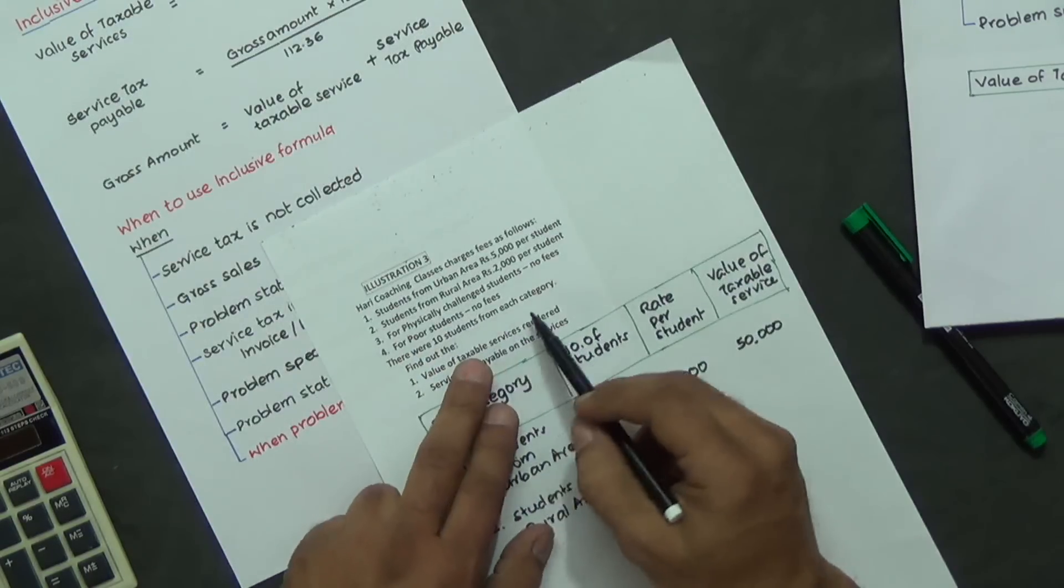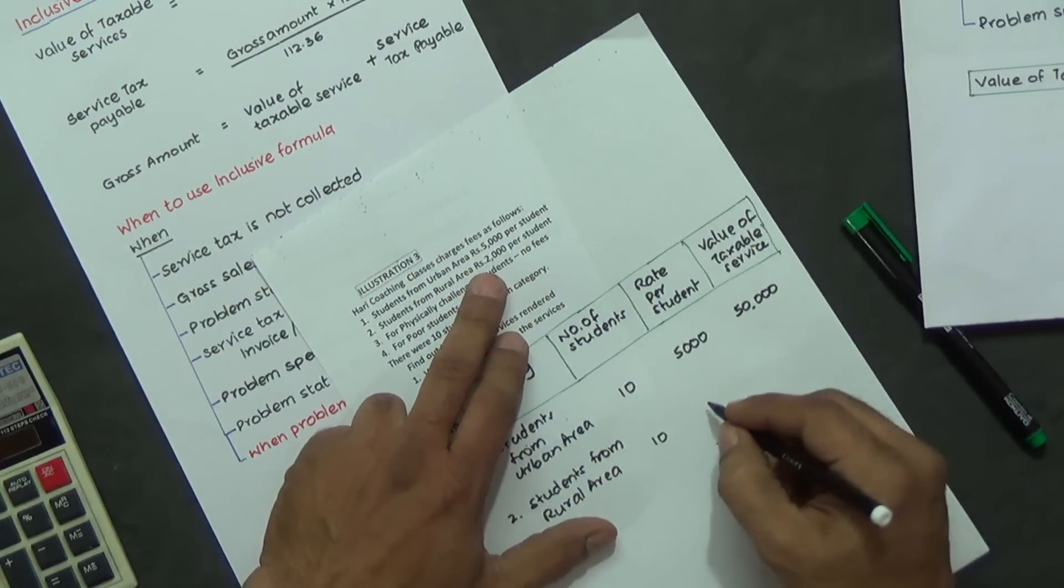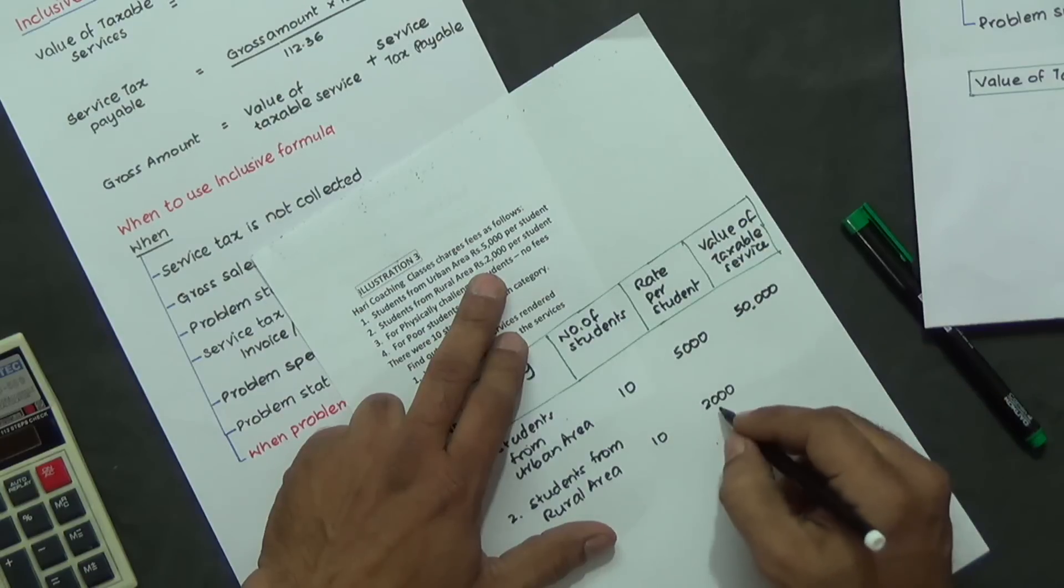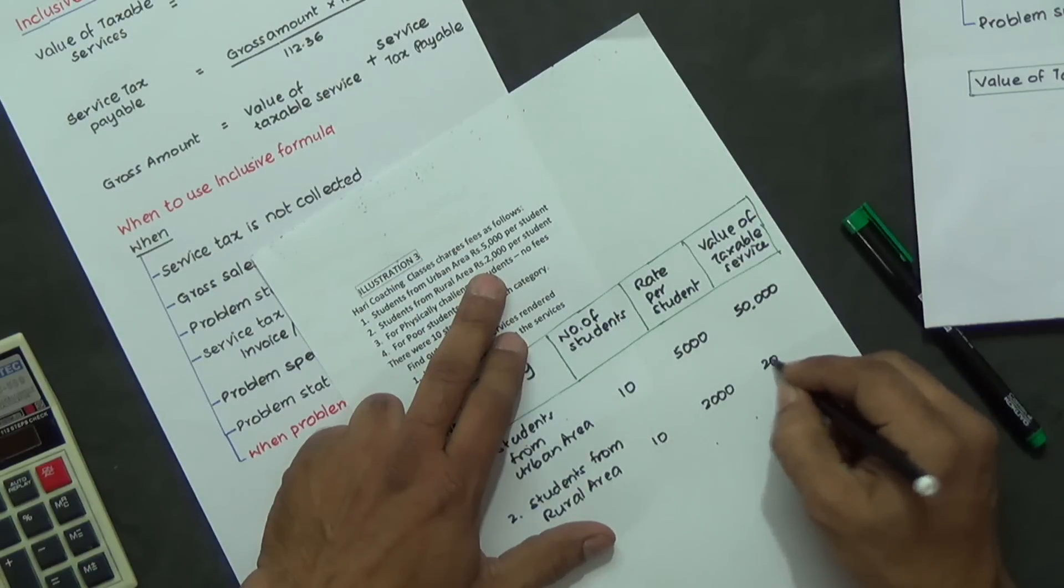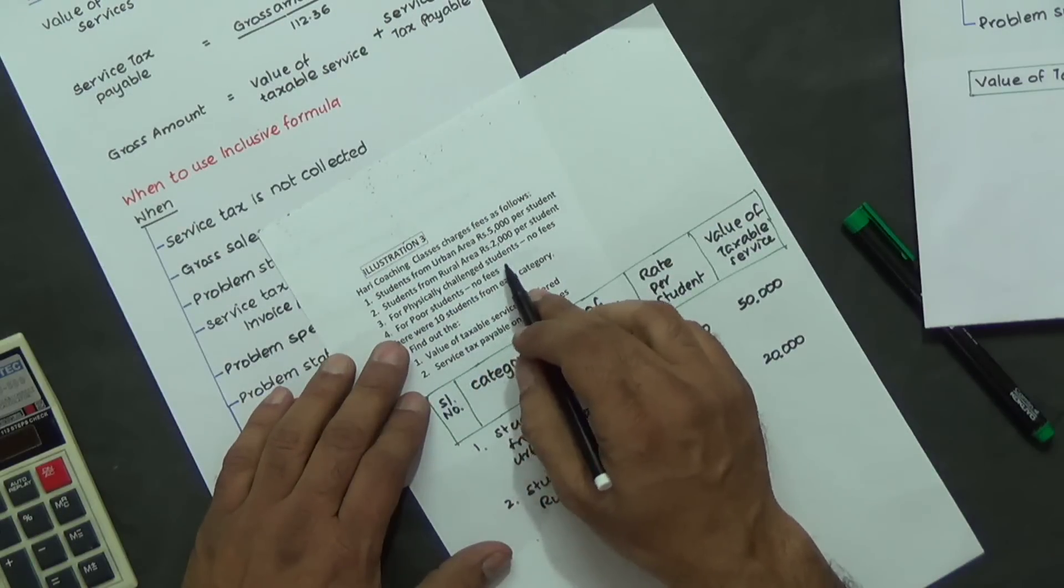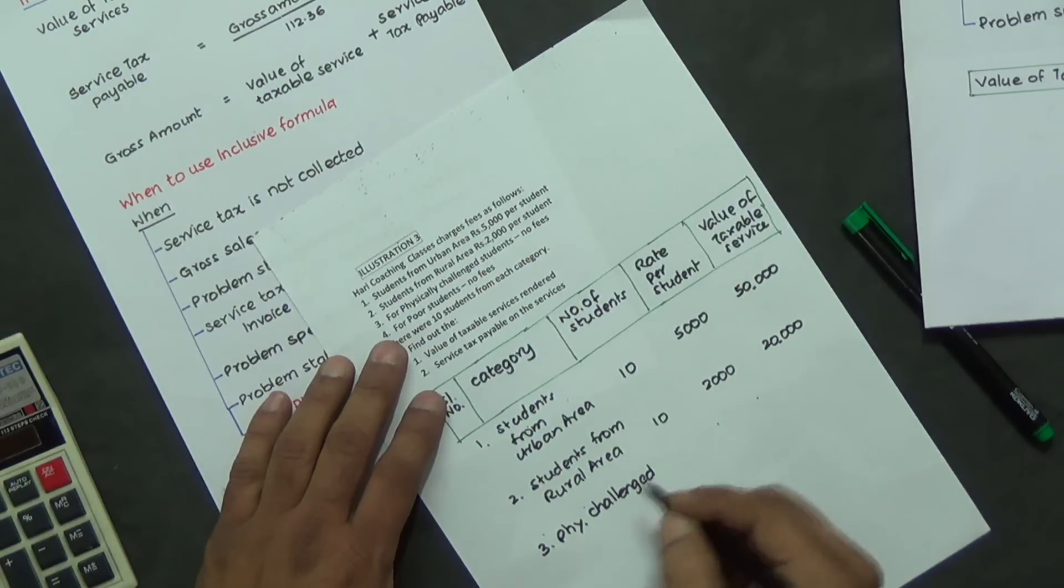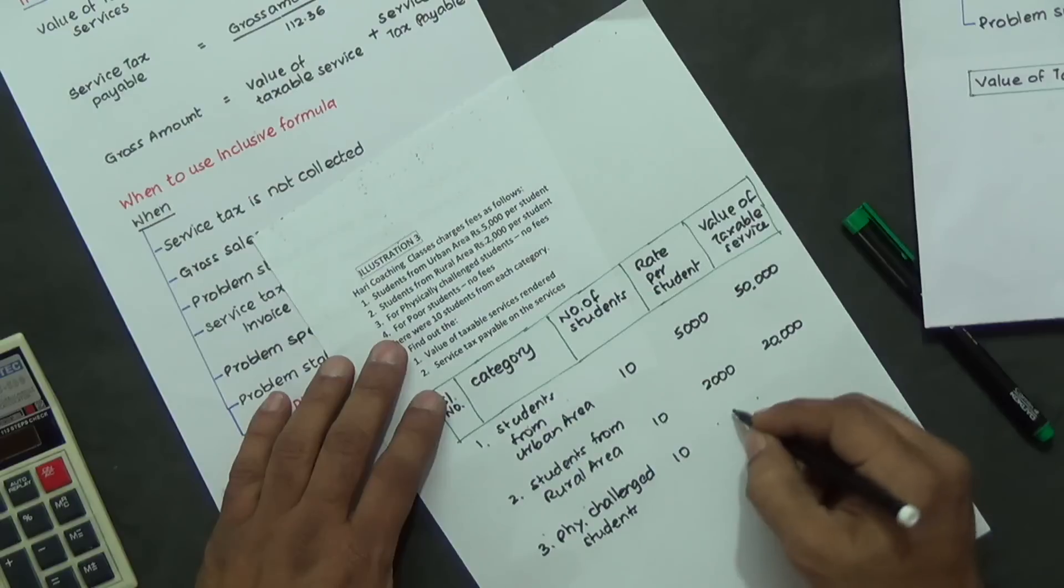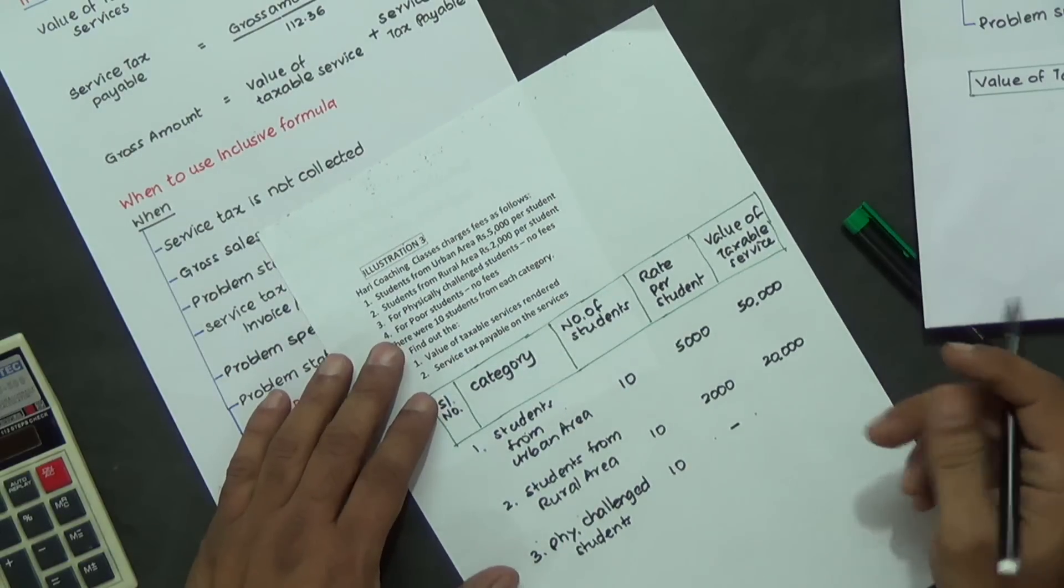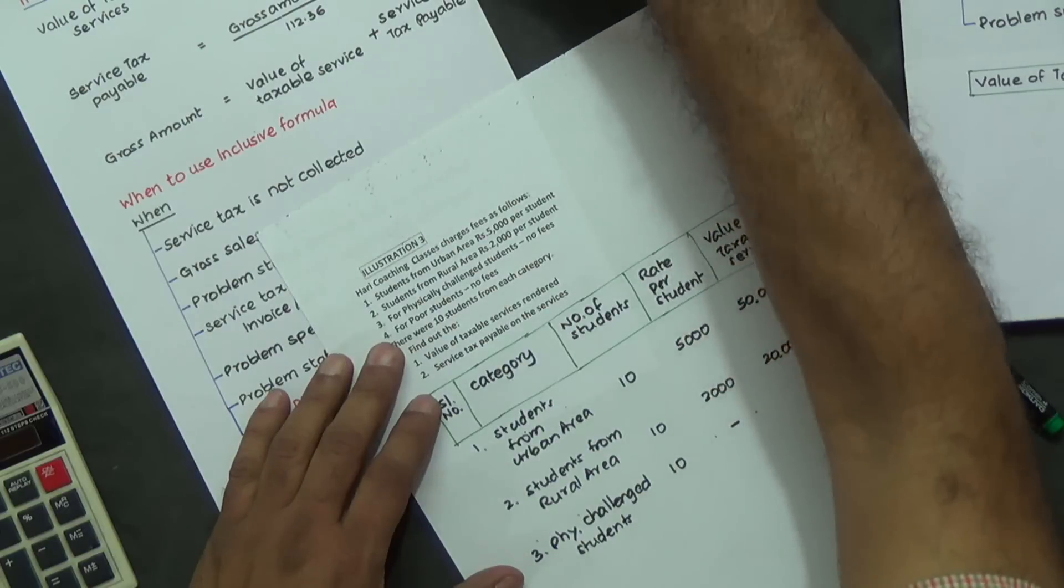Number of students each category 10 students, rate per student is 2,000 rupees, total 2,000 into 10 equals 20,000. Category 3, for physically challenged students, no fees. Physically challenged students, 10 students, no fees. The reason being no consideration, it's not service taxable.